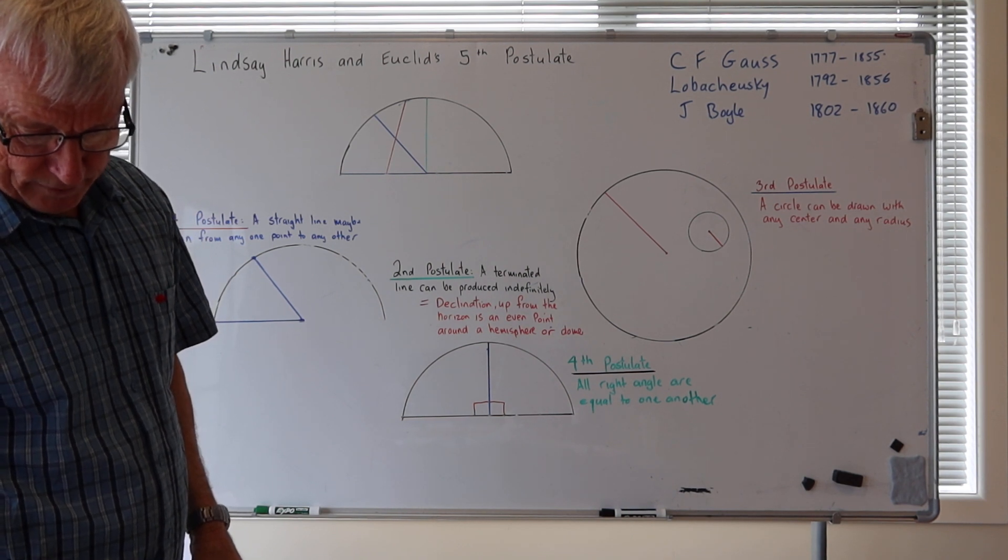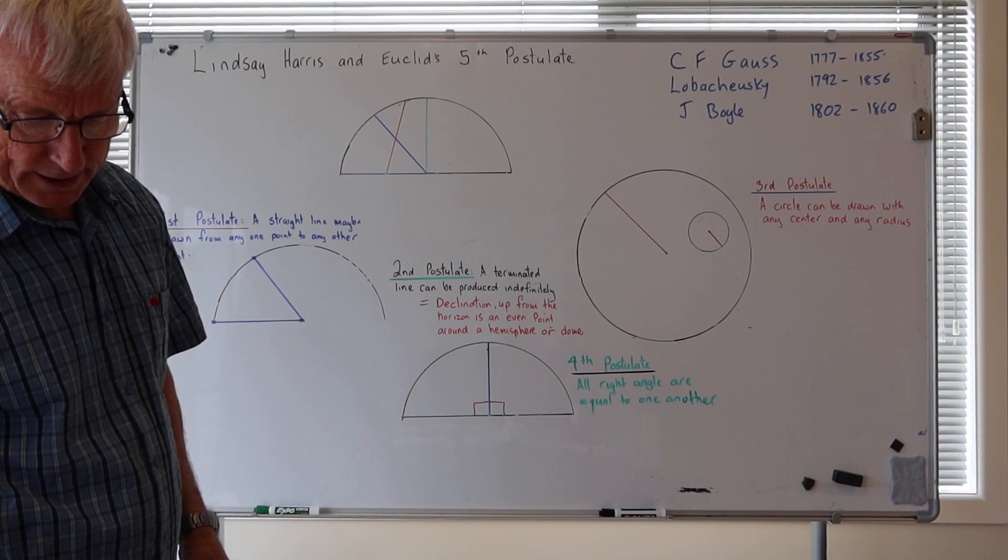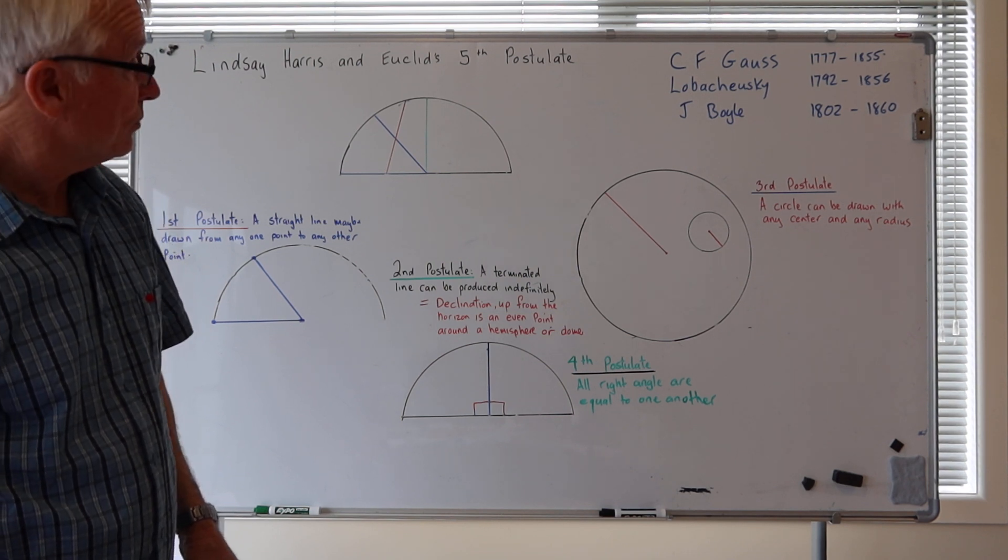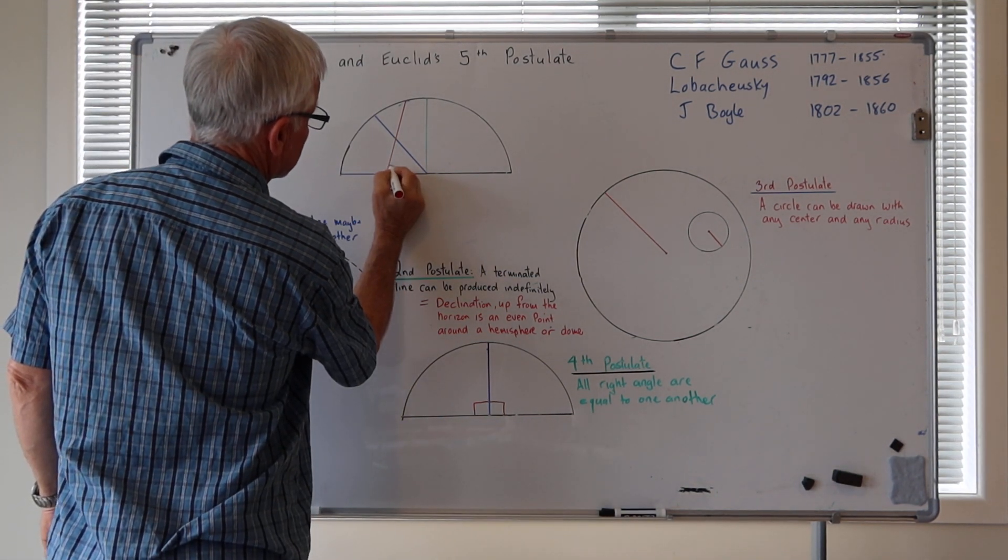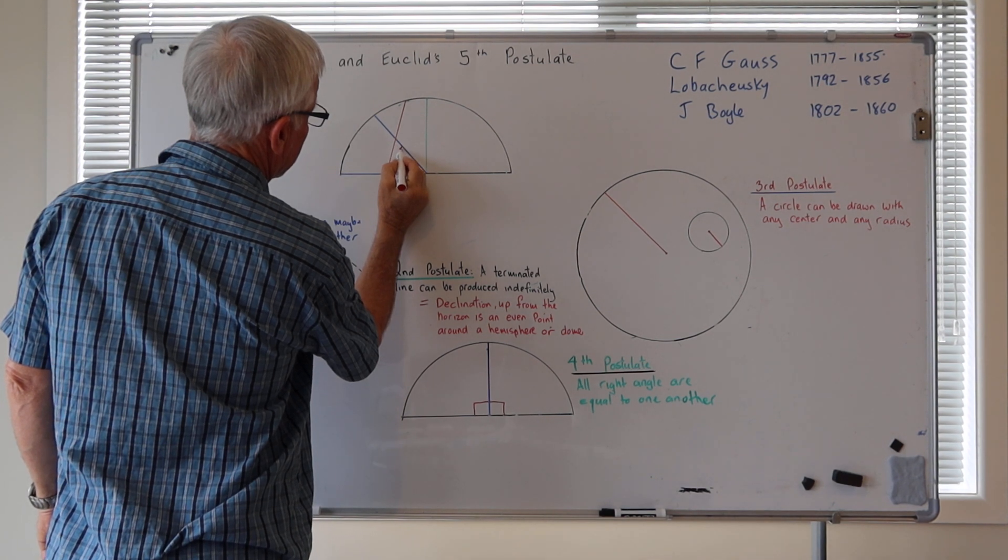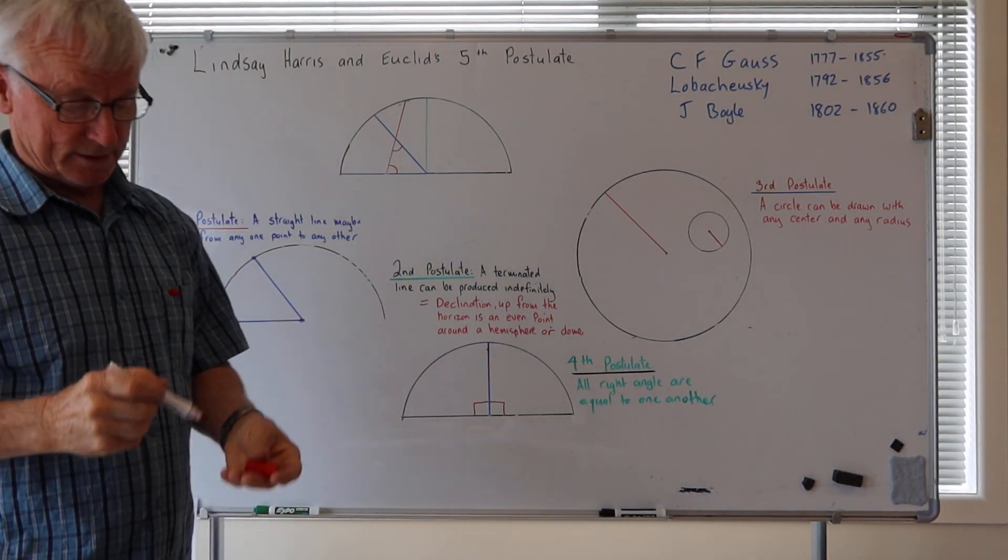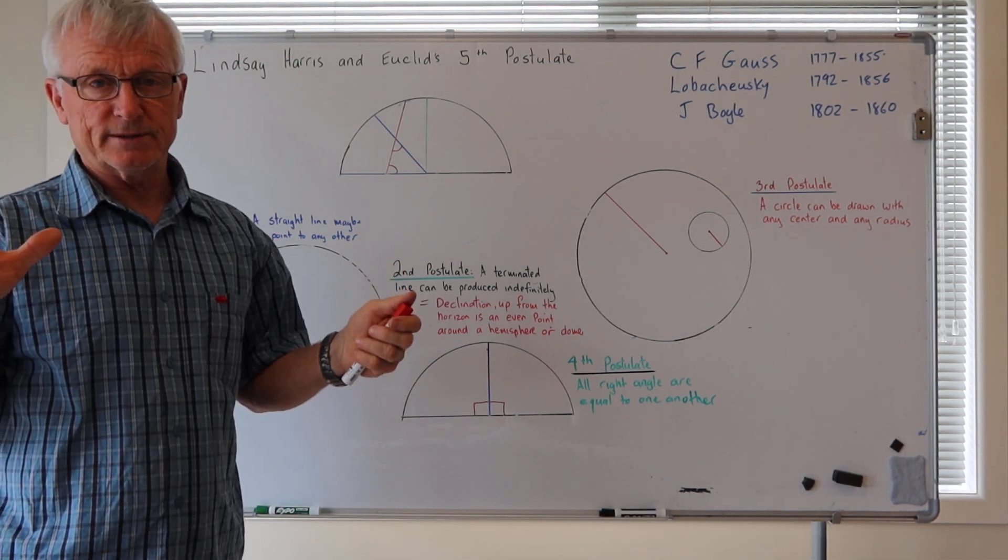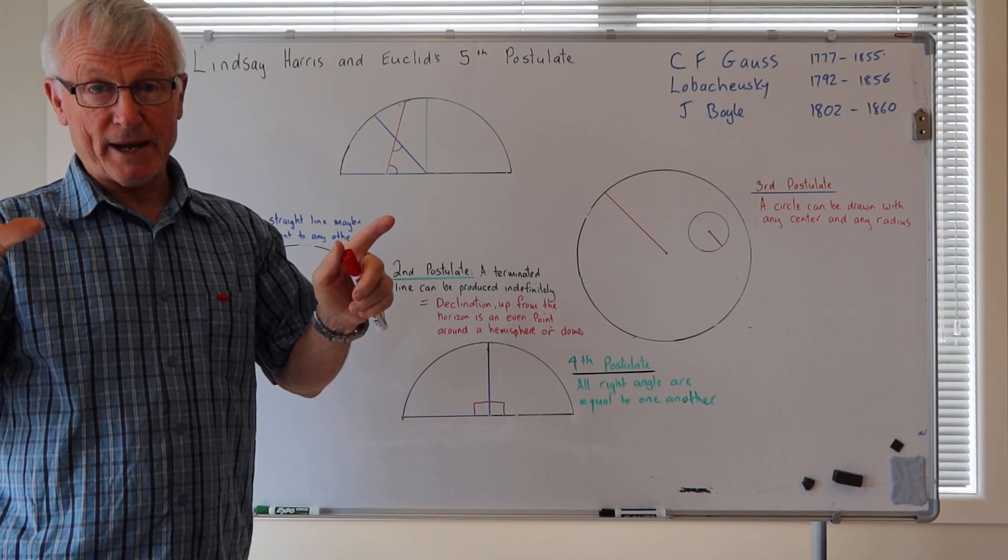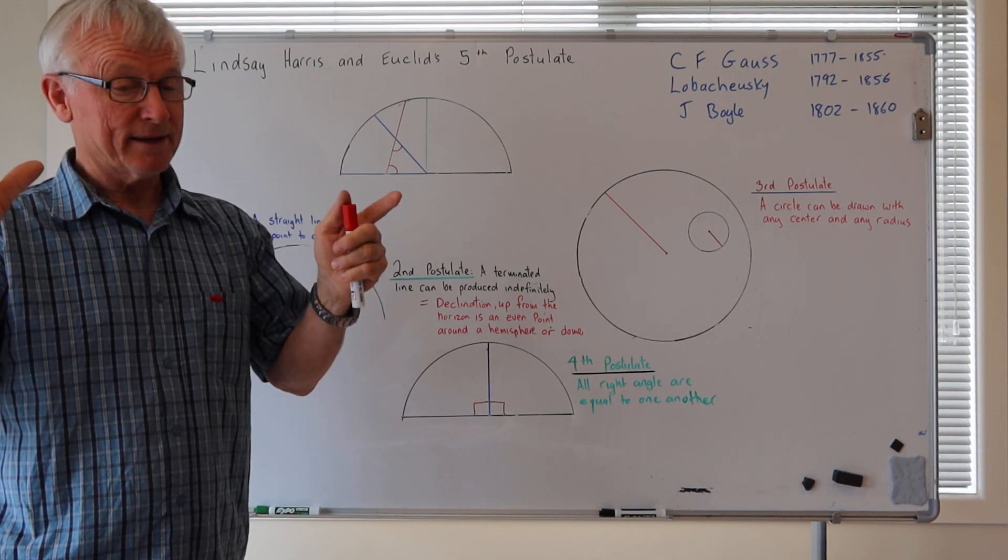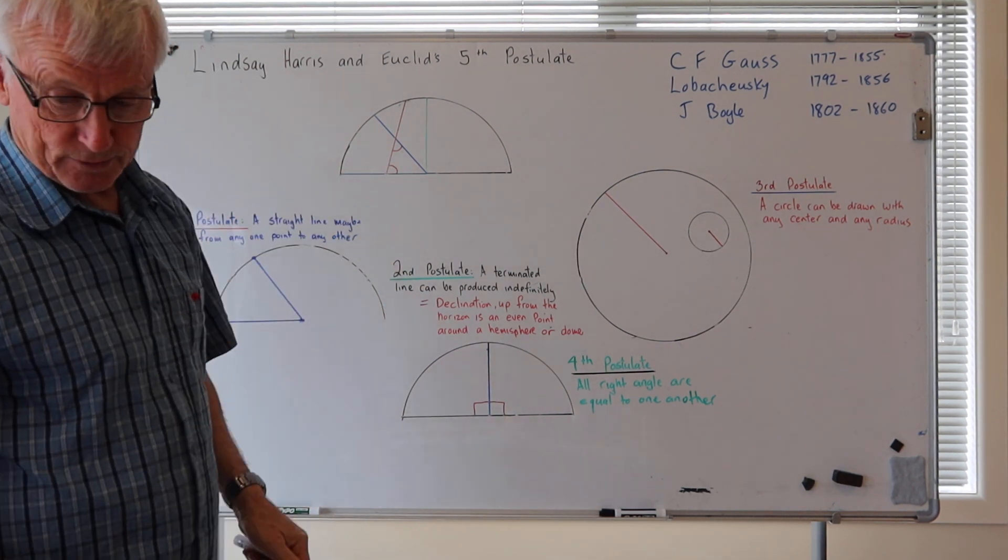If a straight line falling on two straight lines makes the interior angles of the same side less than two right angles, of the same side less than two right angles. There and there, they are both less than two right angles. It has nothing to do with 180 degrees. This is common man getting carried away. It's not written there, is it? No. So we work out these two angles here, right?